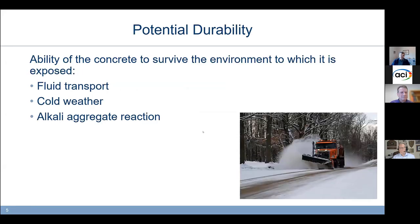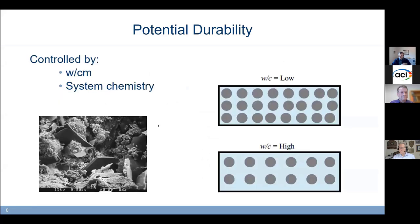Potential durability is the ability of the concrete to survive the environment — valid for fluids getting transported into concrete carrying nasty things with them, cold weather, ASR — all of these failure mechanisms involve water getting through the system somewhere along the line. How do we control that fundamentally? Two ways. One is the water-cement ratio: with lots of cement and not so much water, you can see that it doesn't take a lot of hydration products to fill the whole system with solids as opposed to voids. With a high water-cement ratio, we're probably not going to fill the system up with solids; there will be connected or percolated voids, making it easy for aggressive solutions to get in.